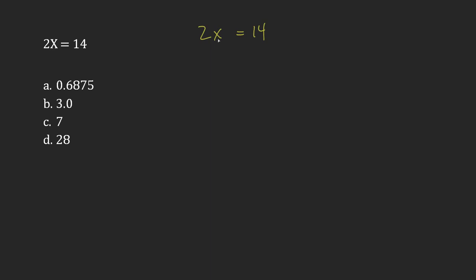The opposite operation, if I'm multiplying x by 2, would be to divide x by 2. As long as I do it to both sides, I won't change the fact that this side equals this side.